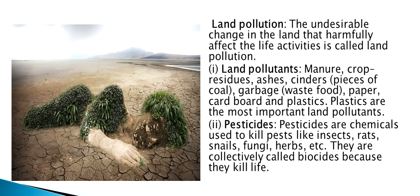Land pollution refers to the undesirable change in the land that harmfully affects life activities. Major land pollutants are manure, crop residues, ashes, pieces of coal, garbage, paper, cardboard and plastics. Plastics are the most important land pollutants. Pesticides are chemicals used to kill pests like insects, rats, snails, fungi, and herbs, and are collectively called biocides because they kill life.